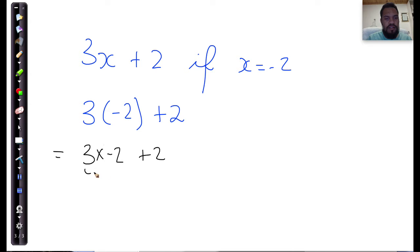And so I've got to do this multiplication first because multiplication always comes before addition. 3 times negative 2, negative times a positive is negative, and 3 times 2 is equal to 6 plus 2. So minus 6 plus 2 gives me a solution of negative 4.